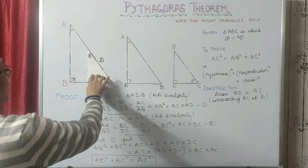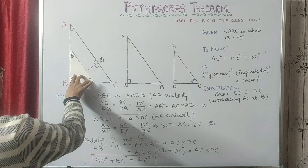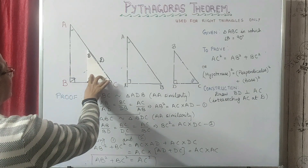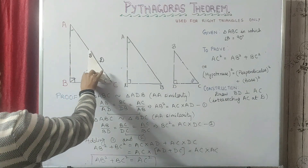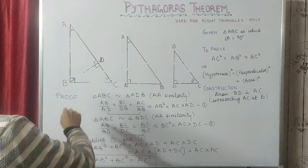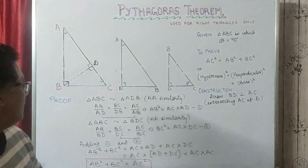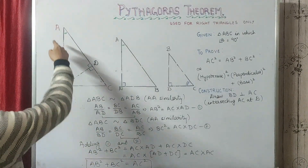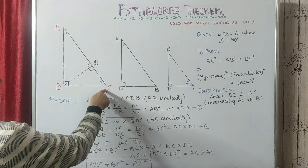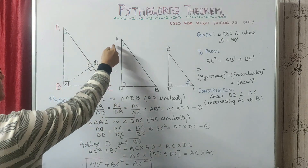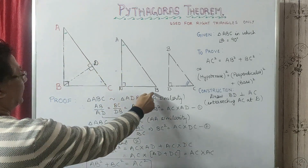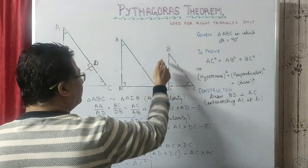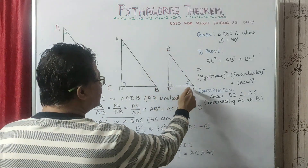See how the sides match as we shift them — how the angles match. So we have proved that triangle ABC is similar to triangle ABD, as well as to triangle BDC.